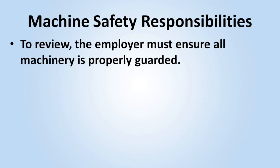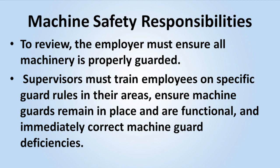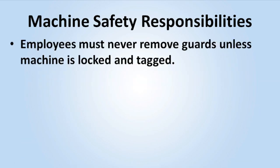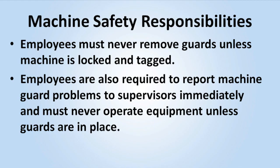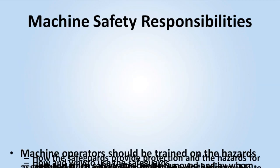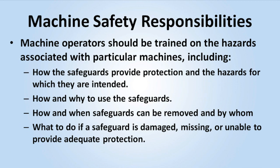To review: the employer must ensure all machinery is properly guarded. Supervisors must train employees on specific guard rules in their areas, ensure machine guards remain in place and are functional, and immediately correct machine guard deficiencies. Employees must never remove guards unless the machine is locked and tagged out. Employees are also required to report machine guard problems to supervisors immediately and must never operate equipment unless guards are in place. Machine operators should be trained on the hazards associated with particular machines, including how the safeguards provide protection and the hazards for which they are intended, how and why to use the safeguards, how and when safeguards can be removed and by whom, and what to do if a safeguard is damaged, missing, or unable to provide adequate protection.